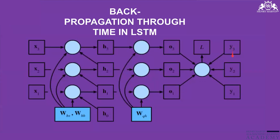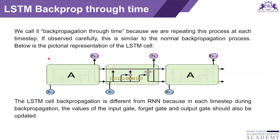We are providing different text — if it is a first line, a second line, this is the third line. The whole sentence will be connected and provided as full text to LSTM. We call it back propagation through time because we are repeating this process at each time step. This is similar to the normal back propagation process.